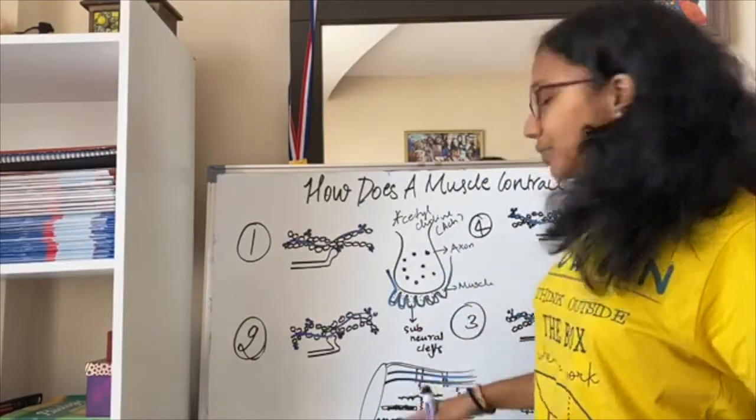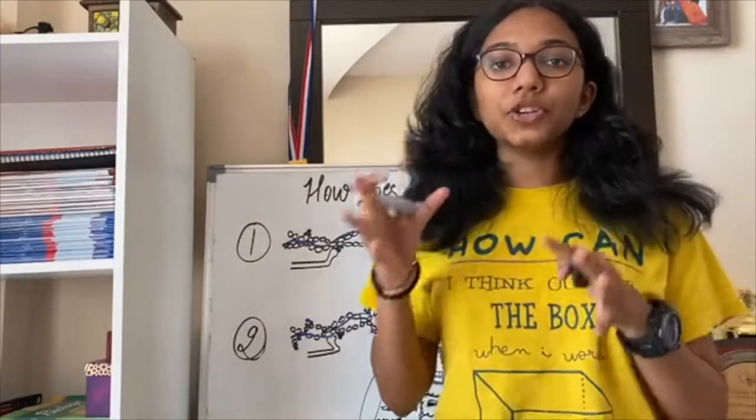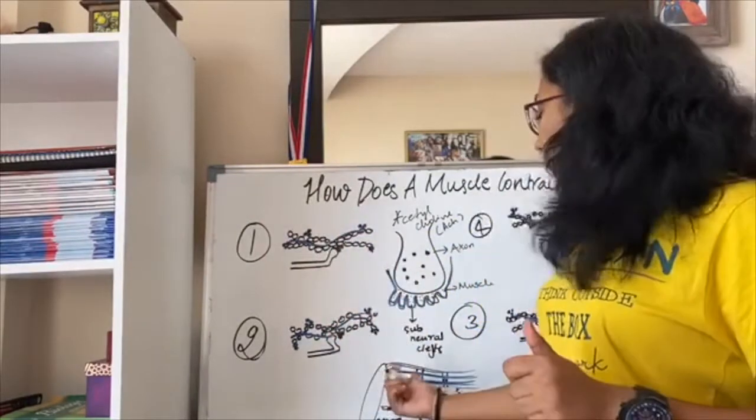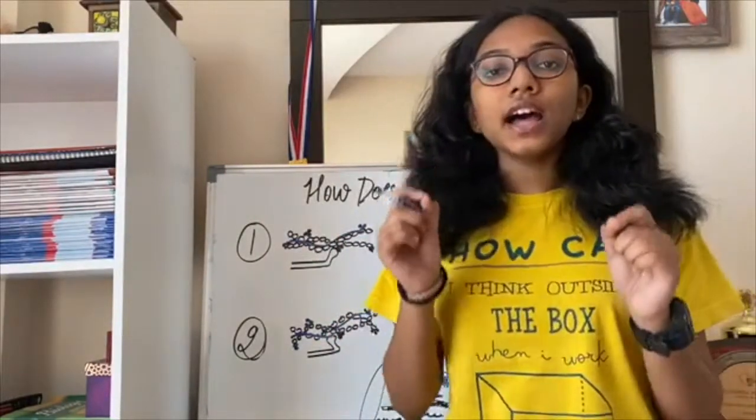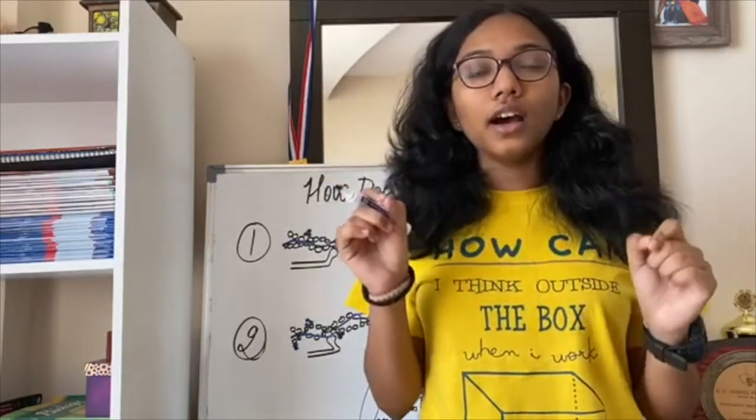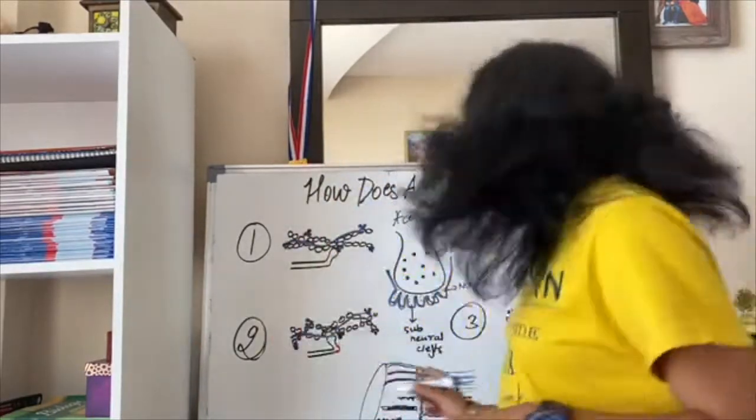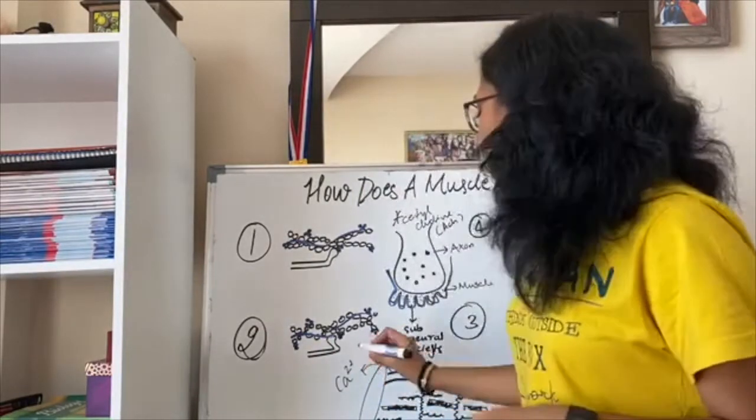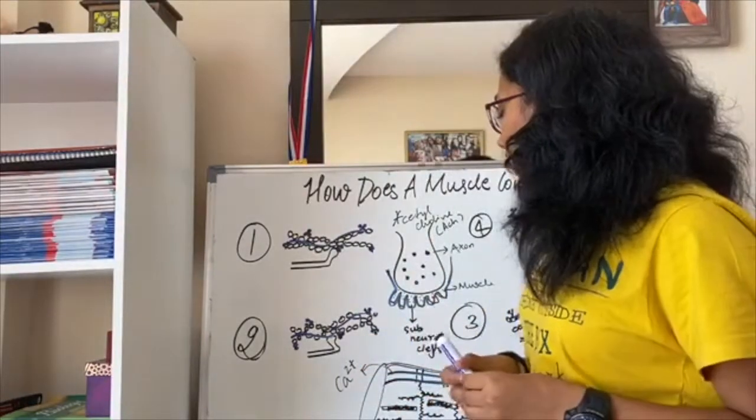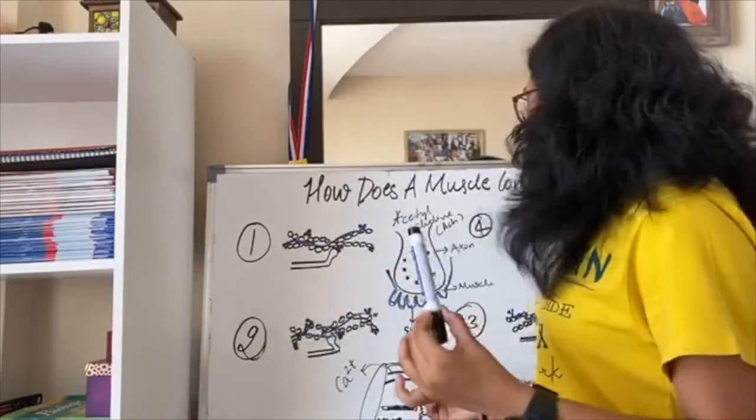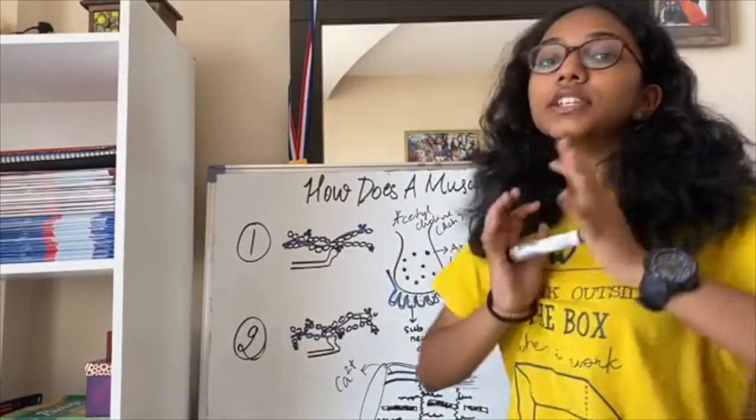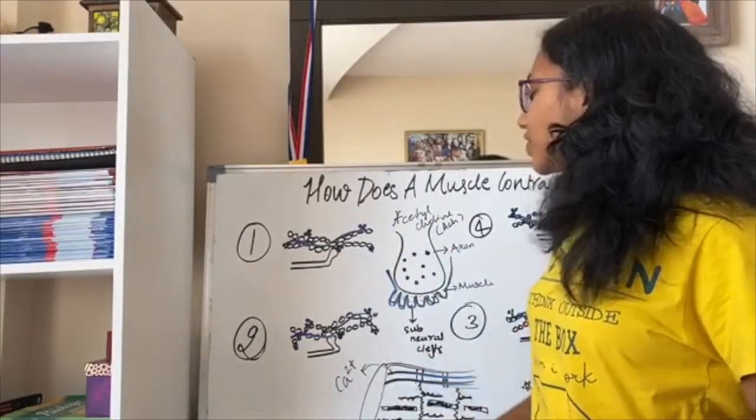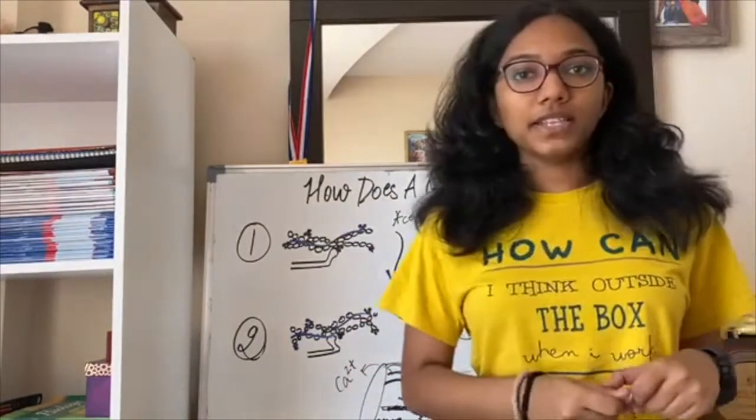L-tubules are perpendicular to the Z line or parallel to the myofibril. So T-tubule, it helps in passing the action potential or the threshold potential throughout the muscle cell and L-tubules are the storehouses of calcium 2 plus ions. So these are L-tubules and they have Ca2+ ions. When action potential is transferred throughout the muscle cell, this L-tubule produces calcium ions in large excess and this calcium ion is now responsible for the contraction of the muscles which we are going to talk about.